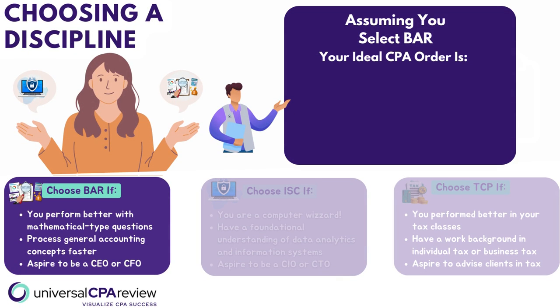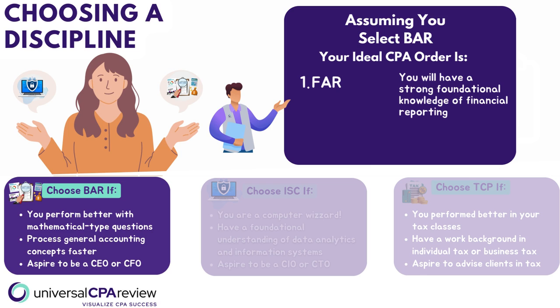So let's say that you select BAR as your discipline. Here's your game plan. You're going to kick things off with the FAR exam — Financial Accounting and Reporting. Think of FAR as your intensive training ground. It's where you're going to build a rock-solid foundation in financial reporting. Once you've laid the foundation, you can attack advanced financial reporting topics, and it'll be more intuitive to conceptualize management accounting topics and compare them to external financial reporting.